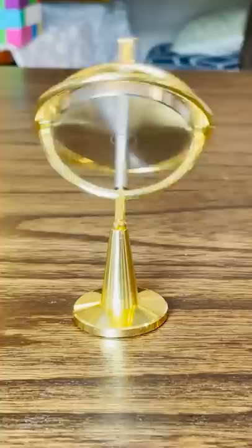Because of this fact, wherever you push on a top, it's actually going to turn 90 degrees out of phase with where you applied the force. So that's what the friction on the table does. It applies a force in a circle around it, wherever it's touching the table, and that pushes it back up.